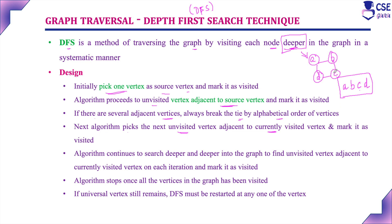In BFS traversal, first we visit vertex A, then we visit vertex B and then D — visiting all adjacent unvisited vertices one by one. After completing A, we identify adjacent unvisited vertex to B, which is C. So BFS output is A, B, D, C, while DFS output is A, B, C, D.